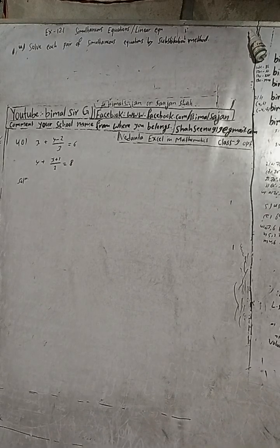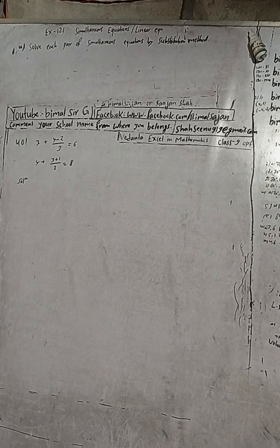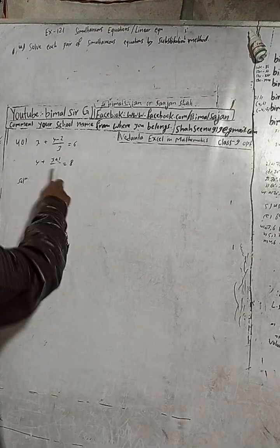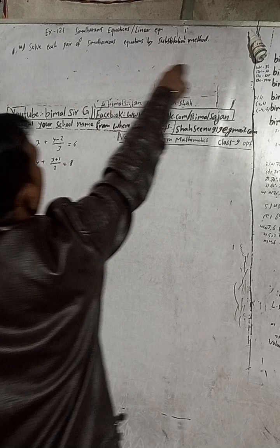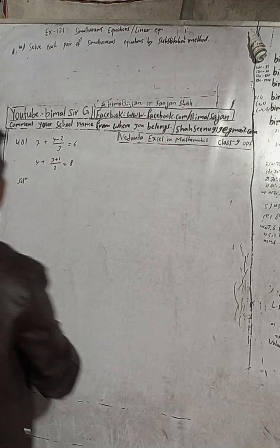This is the last number of Exercise 12.1, that is number 4. Solve this pair of simultaneous equations by substitution method.